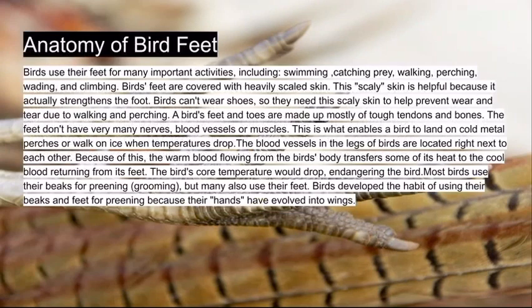Birds use their feet for many important activities, including swimming, catching prey, walking, perching, wading, and climbing. Birds' feet are covered with heavy, scaly skin, which is helpful because it actually strengthens the foot. Birds can't wear shoes, so they need the scaly skin to help prevent wear and tear from walking and perching. A bird's feet and toes are made mostly of tough tendons and bones. The feet don't actually have many nerves, blood vessels, or muscles. This is what enables a bird to land on cold metal perches or walk on ice when temperatures drop.